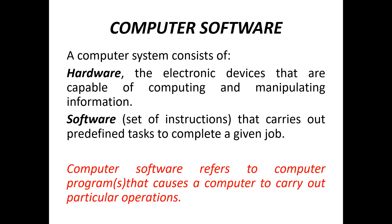Software is a set of instructions given to perform a job, and hardware are electronic devices capable of manipulating and processing information. In simple language, computer software refers to computer programs that cause the computer to carry out particular operations. These programs are written in some kind of language like C, C++, Java, or Python — code that gives instructions to the computer to perform particular operations.